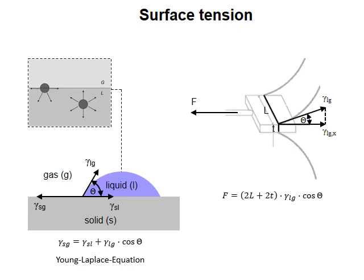The x component of the liquid gas surface tension is trying to pull the plate into the water. By considering the contact angle, we can calculate the force acting on the plate. The x component of the surface tension has to be multiplied by the entire perimeter of the plate to obtain the resulting force.